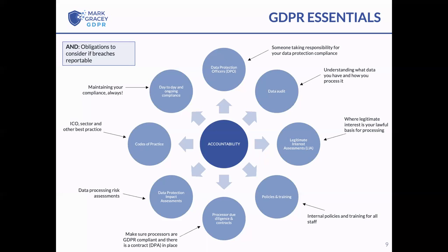The ICO and other regulators can publish best practice, sector codes, or certification schemes to support your compliance. There are ICO codes of practice, but not many certification schemes approved from outside the ICO. It's worthwhile keeping an eye on best practice guides and codes of practice — while they may not be strictly legally binding, it's difficult to defend doing something a code of practice says you shouldn't.